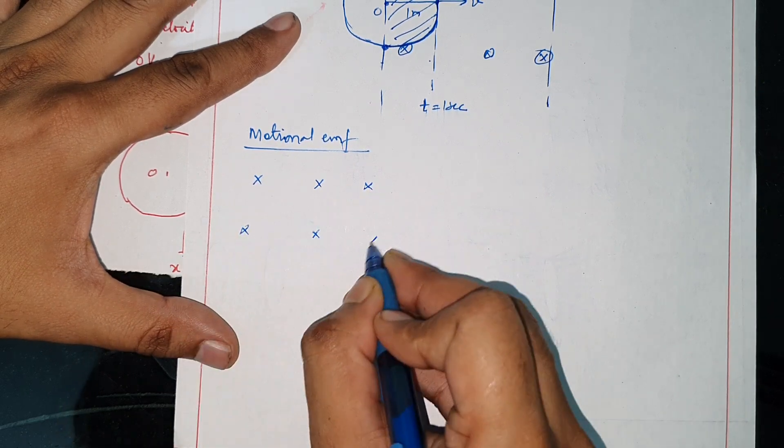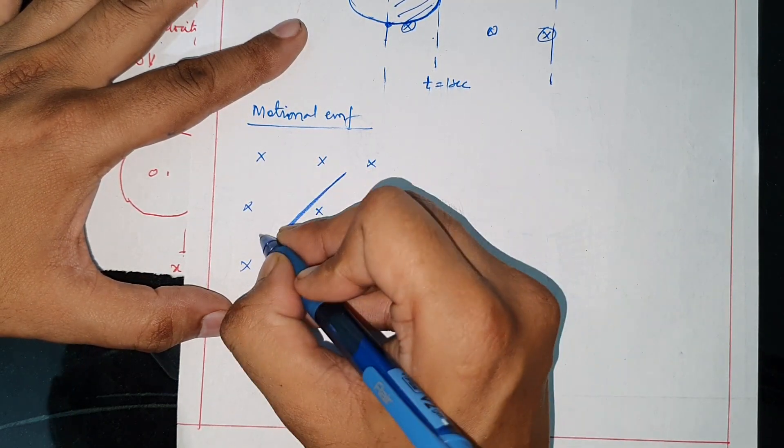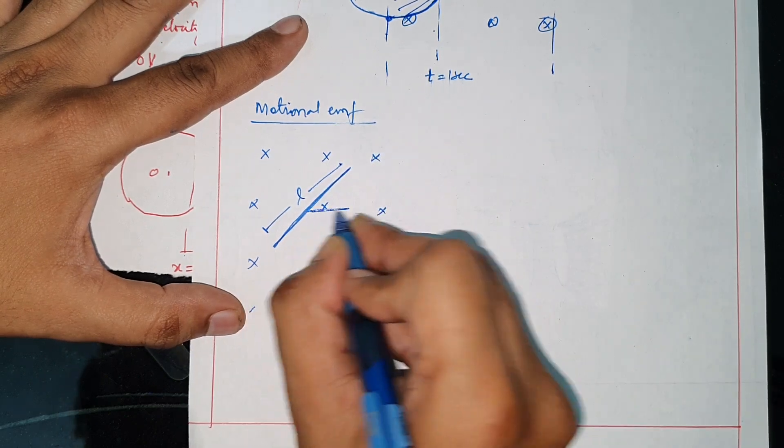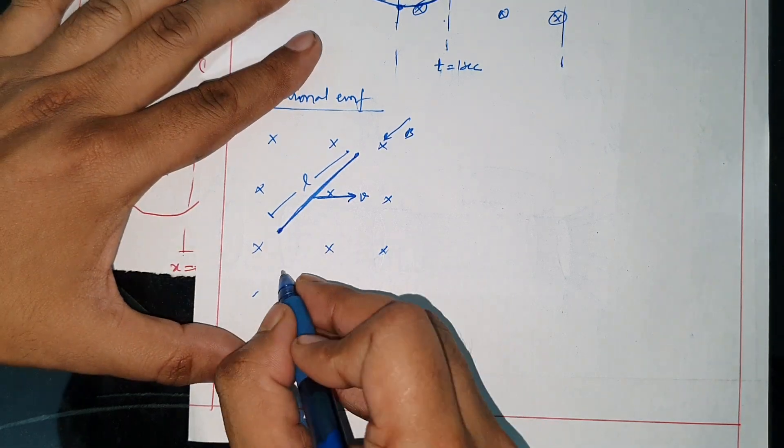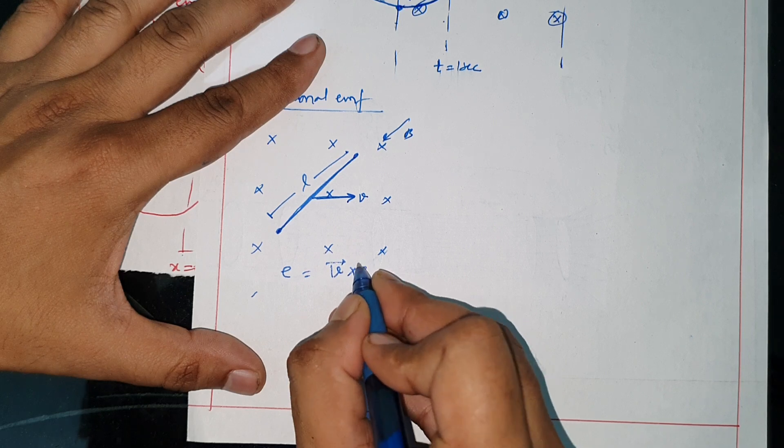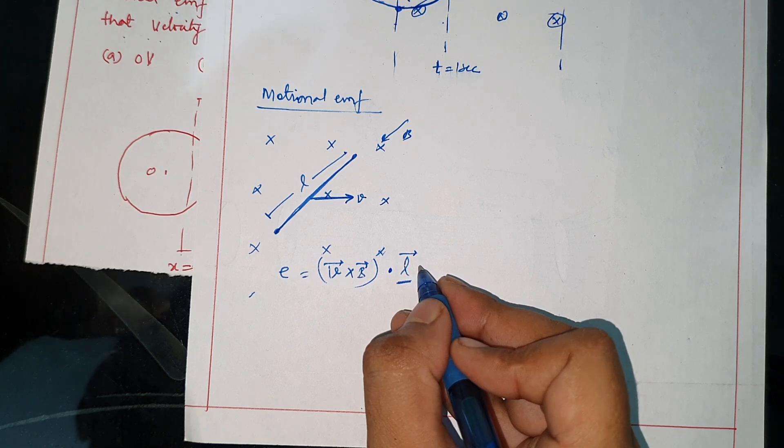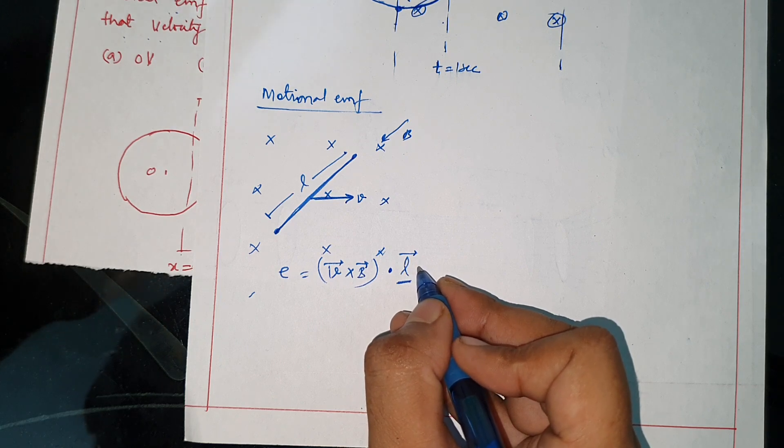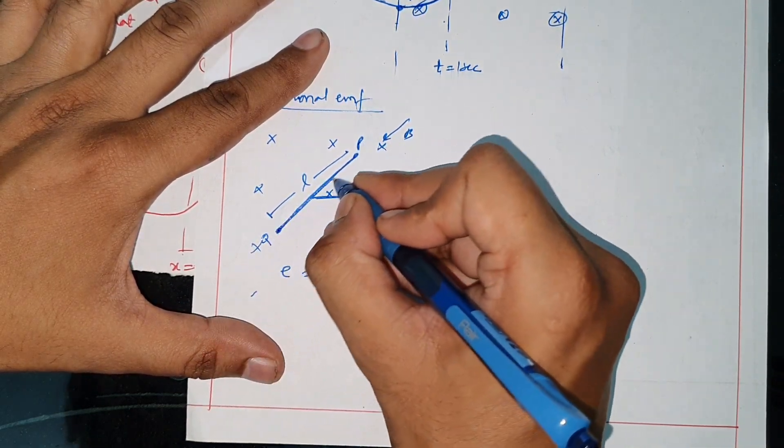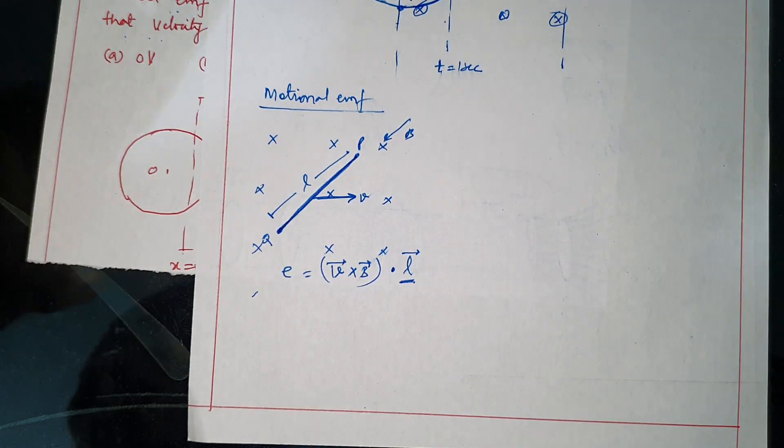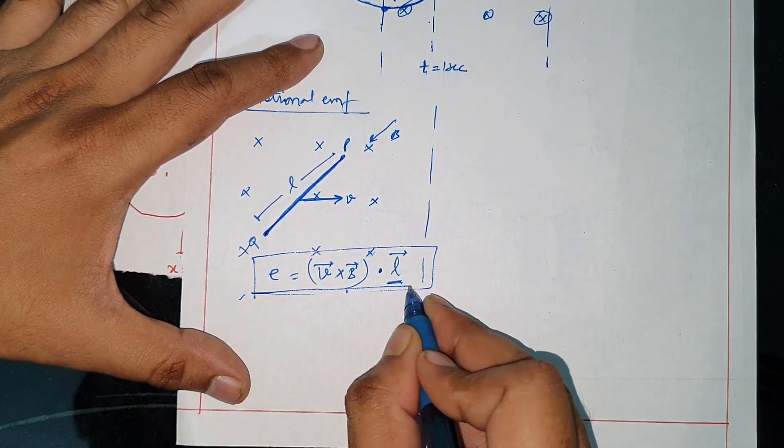So, if you are in the index section, the EMF across the rod is v-vector cross B-vector dot l-vector. L is a displacement vector. These are the two points between displacement vectors, which you want to calculate the potential difference across. This is a general formula, but there are two cases.